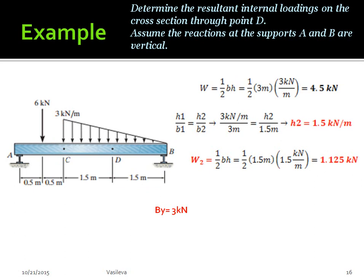Once again, we need to figure out where it's located. For a triangle, it's located one-third from this thick base. So one-third times this total base, 1.5 meters, is 0.5 meters away. W2 is located here, 0.5 meters away from point D, and it is 1.125 kilonewtons. Now that we've found all our loads to the right of point D—we found By, we found W2.